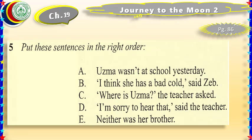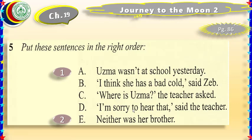This is part number 5. We are asked to join the sentences in the right order. The method is: first read all the sentences, then try to find the correct sequence. The sentences are: A — 'Usma wasn't at school yesterday.' E — 'Neither was her brother.' C — 'Where is Usma? The teacher asked.' B — 'I think she has a bad cold, said Zeb.' D — 'I am sorry to hear that, said the teacher.' So the order is: A (1st), E (2nd), C (3rd), B (4th), D (5th).